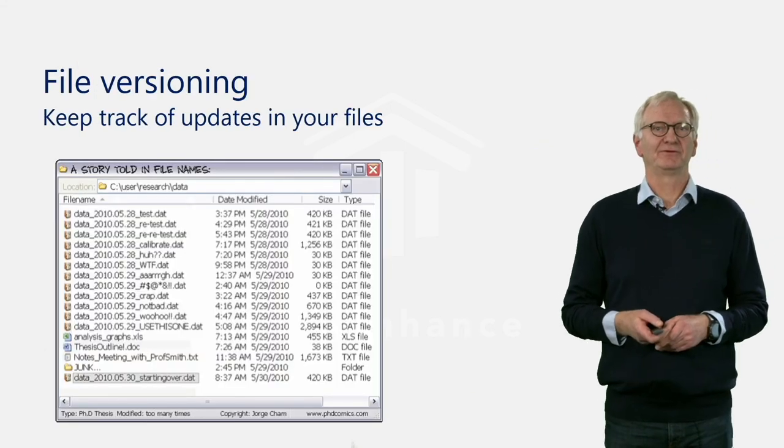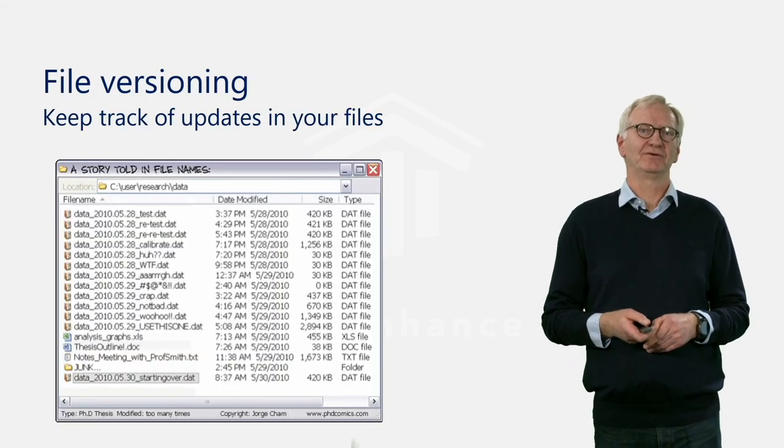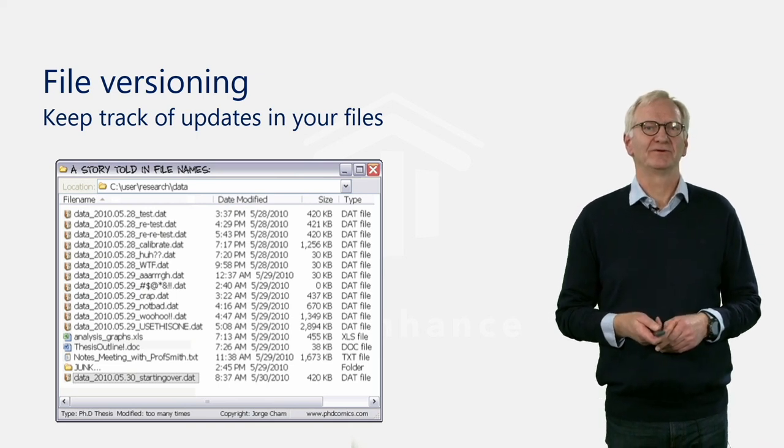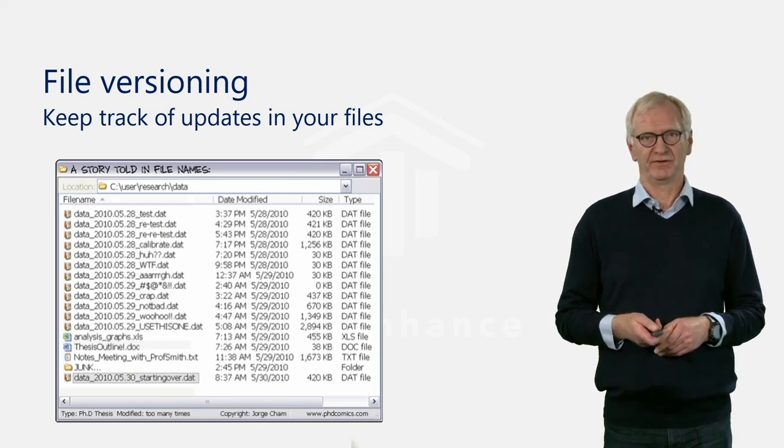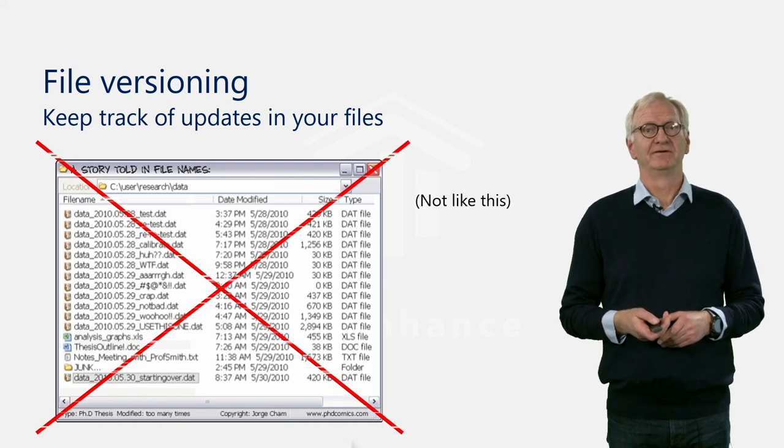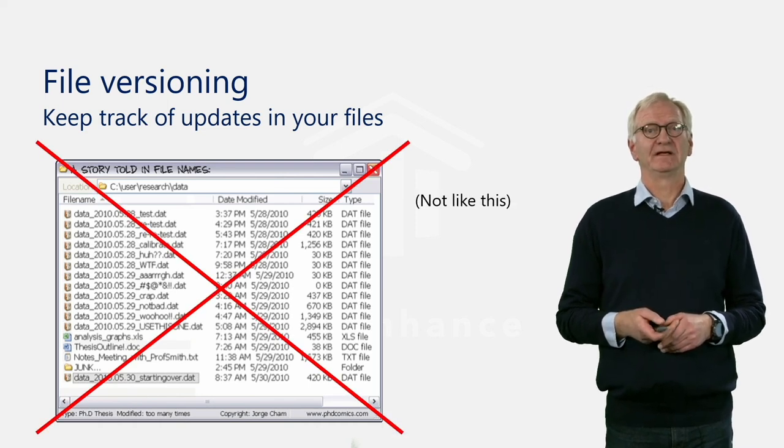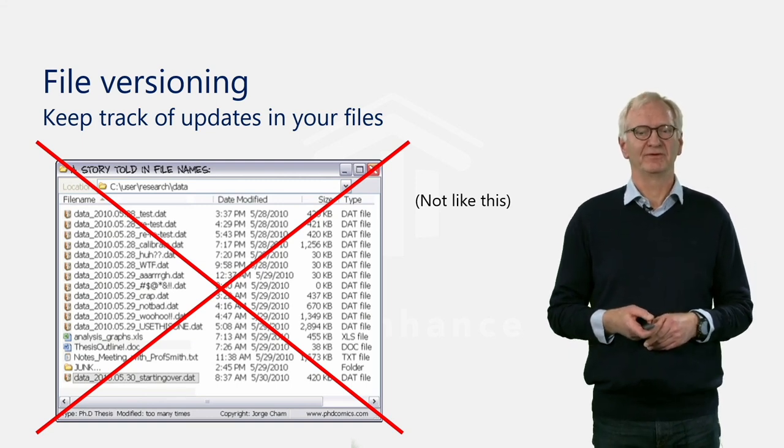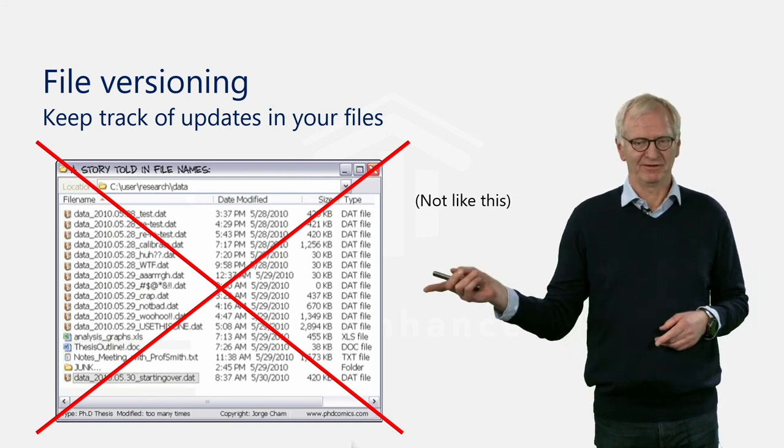Finally, be careful to keep track of and document all changes that create new versions of your files. This applies for updates to files both before and after the dataset has been archived. When the file is updated, this should be indicated in the file name, but do it tidily and be consistent in how you do it.